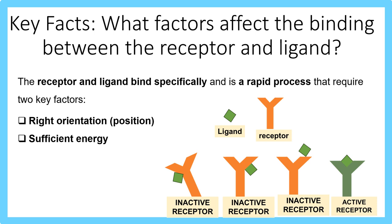Looking at this diagram, you can see that the ligand has been placed in various positions. But because it hasn't been positioned in the right orientation, it's inactive. When it's been added to the ligand binding site in the extracellular domain, you can see that it's now active. The extracellular domain is the area where the ligand binding site is found.